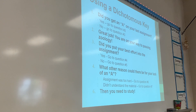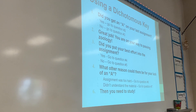They're really not that difficult, and it's best to just jump right in with an example. So: did you get an A on your last assignment? If yes, go to question two - 'Great job, you're on your way to passing Zoology.' If no, go to question three: did you put your best effort into the assignment? If yes, go to question four - what other reason could there be for your lack of getting an A? If no, go to question five. And so on. This is how you use a dichotomous key.